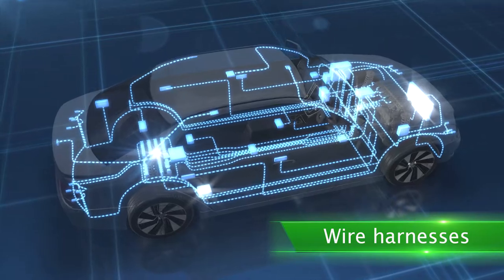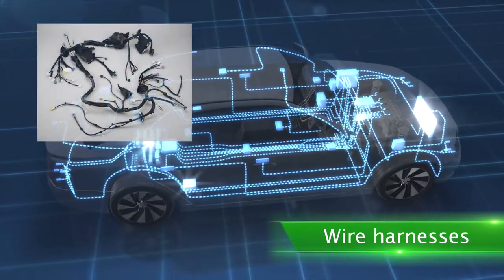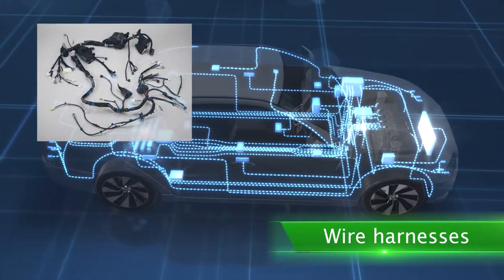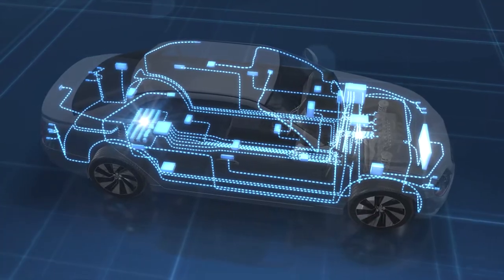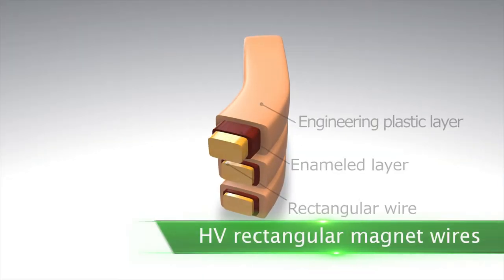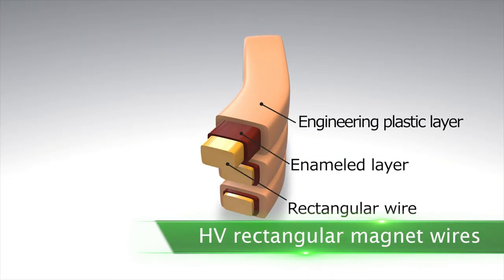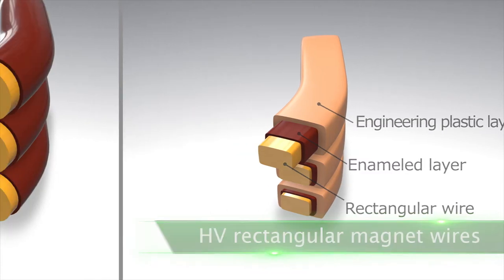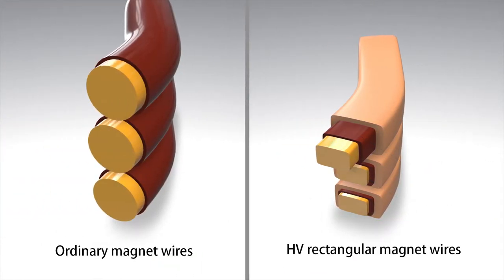By switching from copper to aluminum, we have made wire harnesses lighter, contributing to improved fuel efficiency. High-voltage rectangular wires developed by Furukawa Electric are used in the motors of electric and hybrid vehicles. By changing the cross-section profile of wires from round to rectangular, we have improved the magnet wire space factor, thereby enhancing efficiency and saving space.